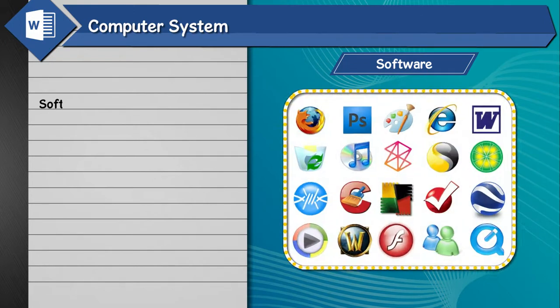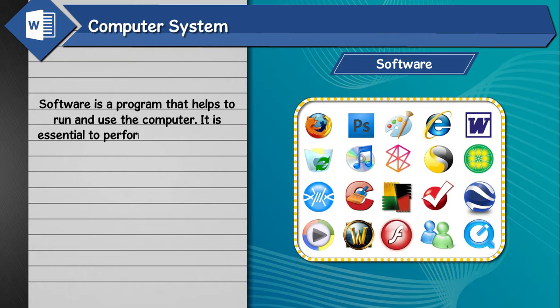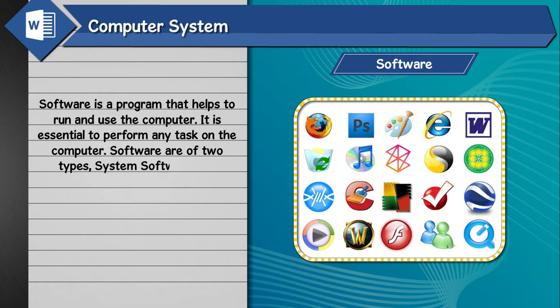Software. Software is a program that helps to run and use the computer. It is essential to perform any task on the computer. Software is of two types: system software and application software.